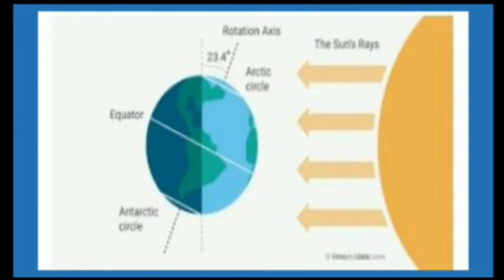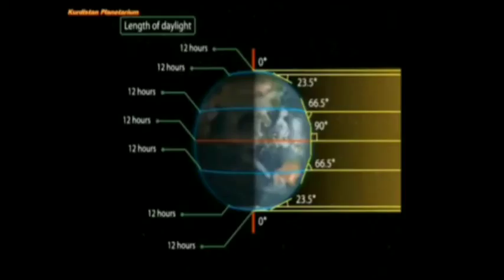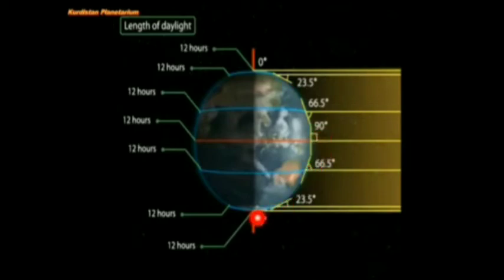If the Earth were not tilted — if its axis were completely straight — then all places on the Earth from the North Pole to the South Pole would receive an equal amount and equal duration of day and night, that is 12 hours of daylight and 12 hours of night. But because the Earth is inclined, we have different seasons.